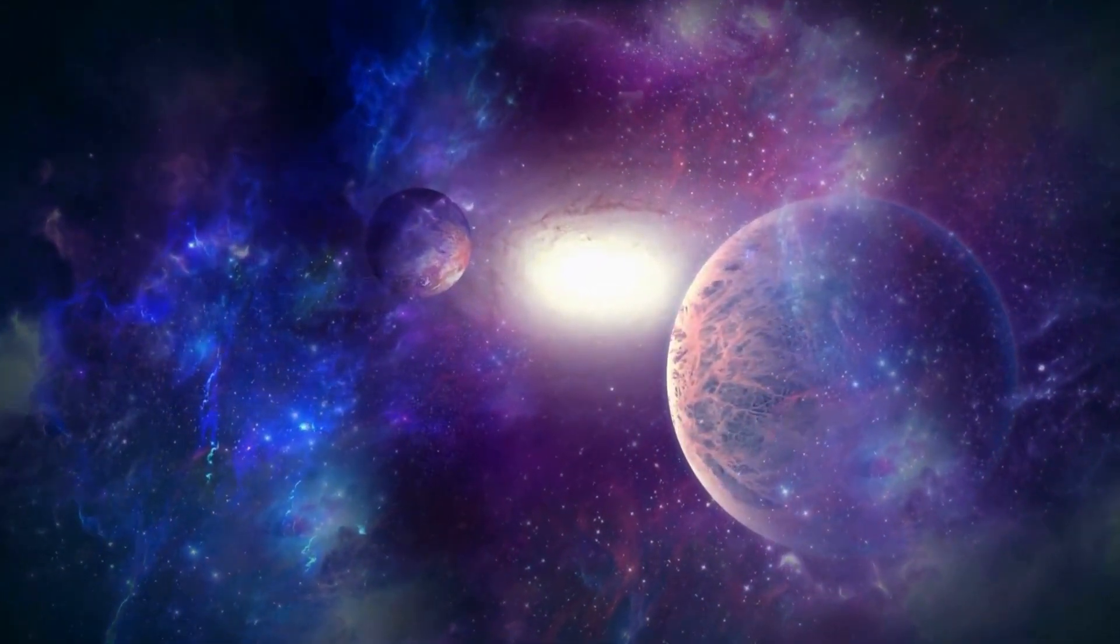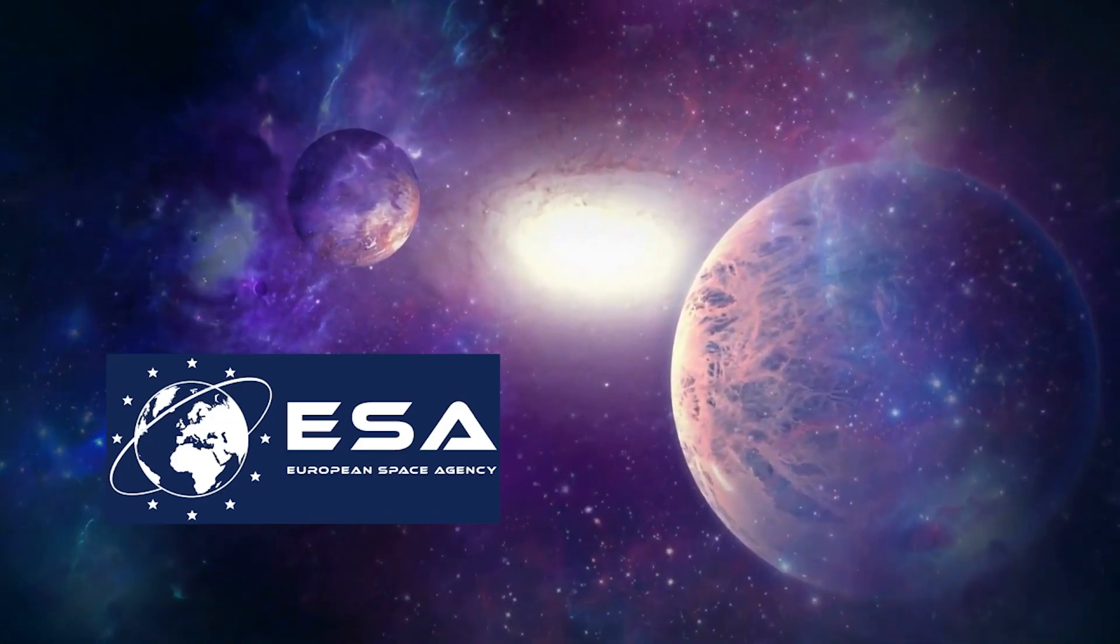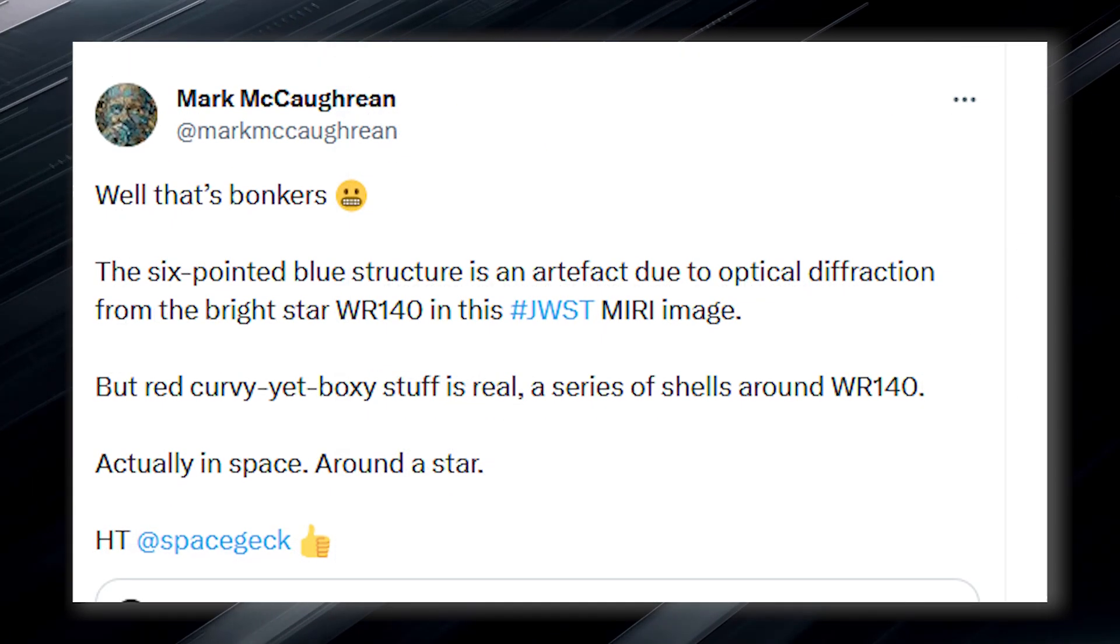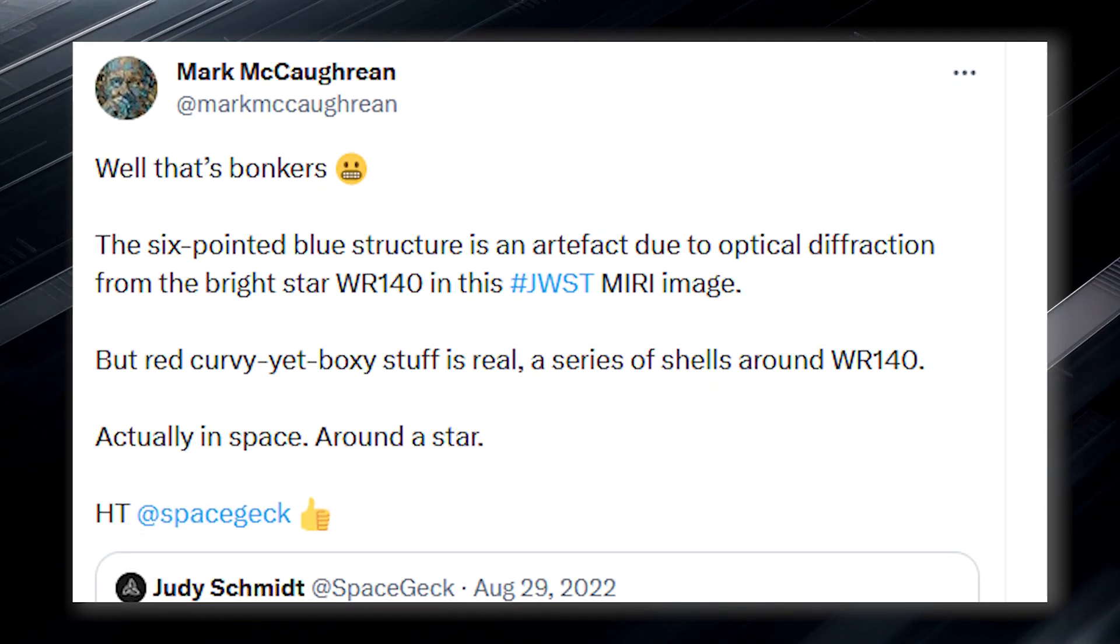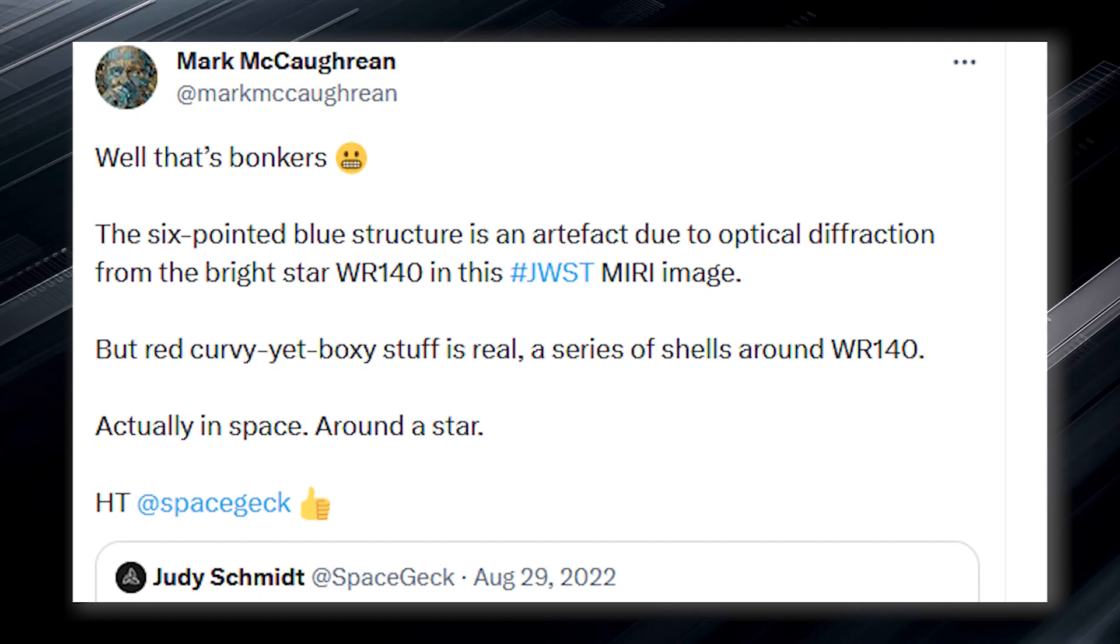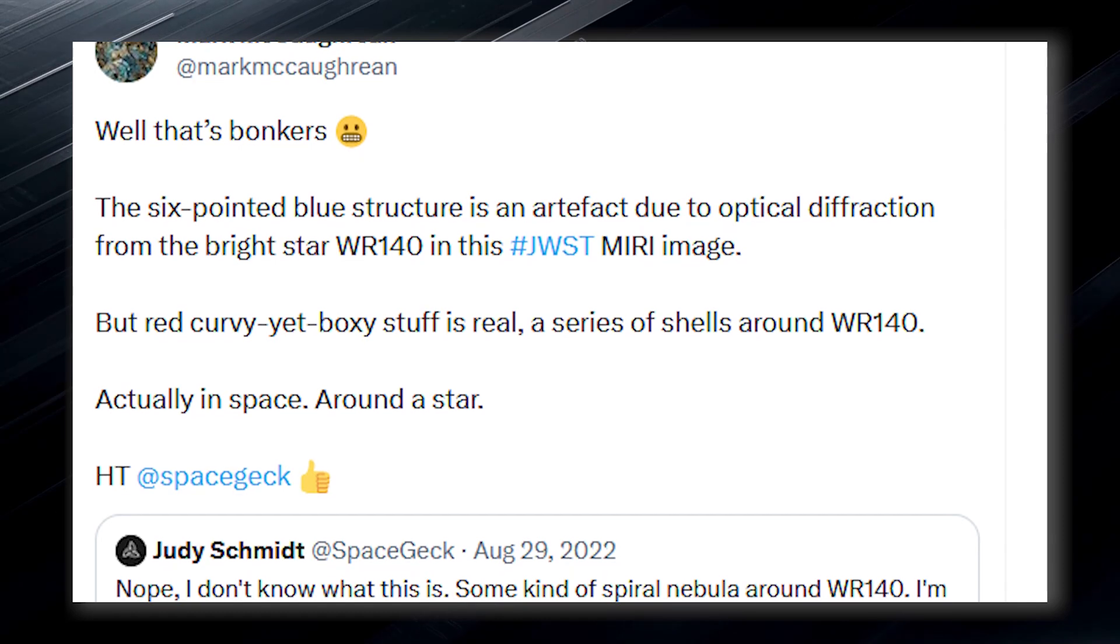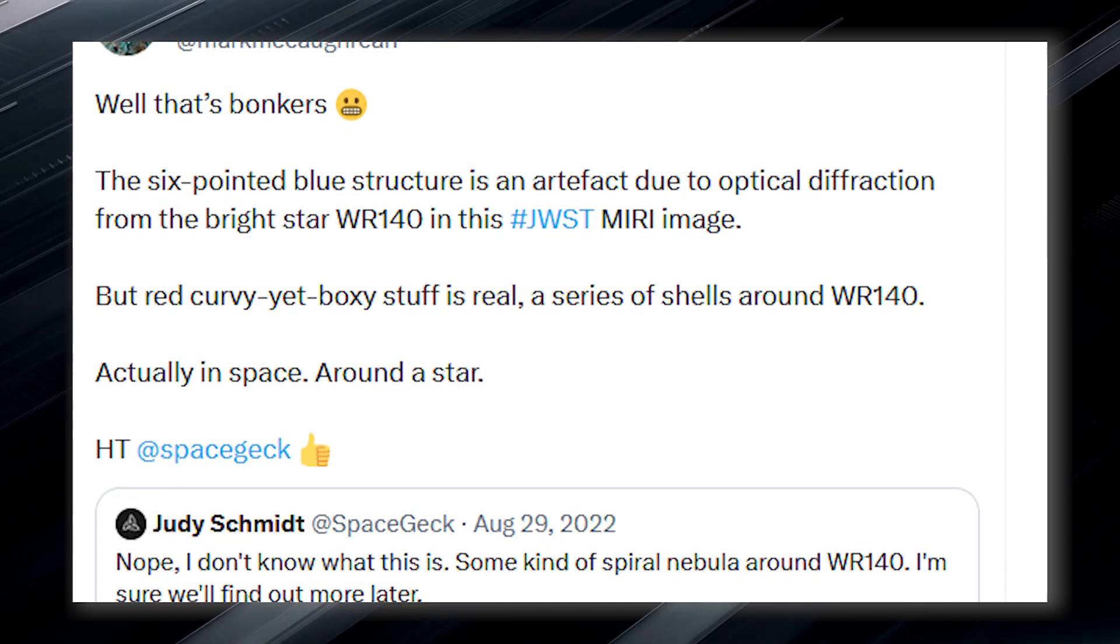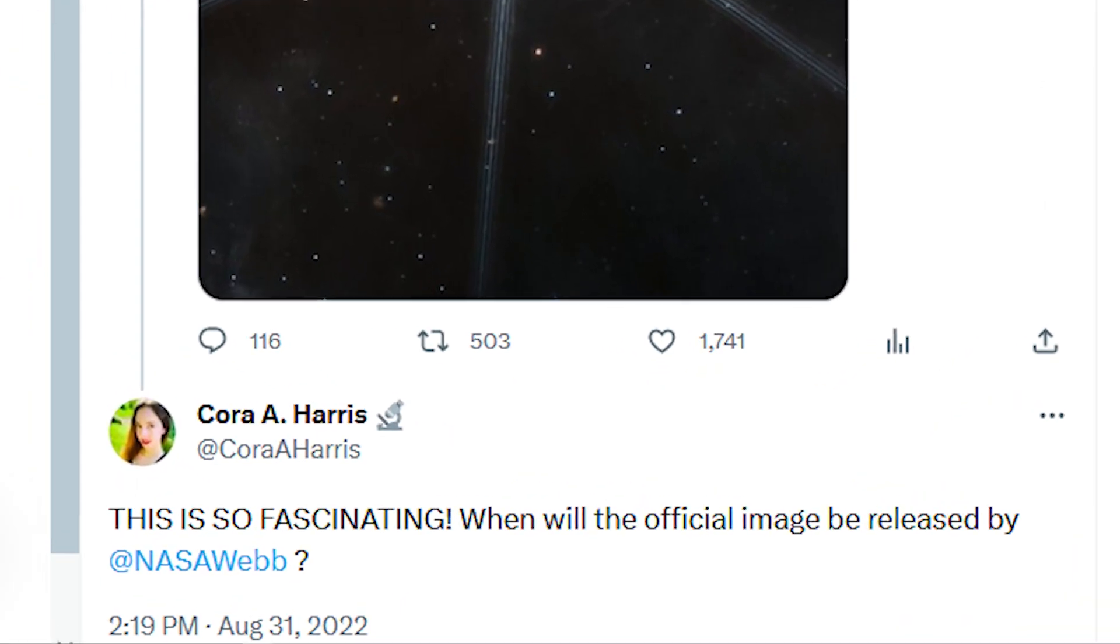Mark, an interdisciplinary scientist with JWST Science Working Group and a science advisor to the European Space Agency, called the feature wacky in a Twitter thread. He explained that the six-pointed blue structure is an artifact due to optical diffraction from the bright star WR 140 in the image. However, he noted that the red curvature is real and represents a series of shells around WR 140 in space. Although NASA is expected to have something to say about this, it is expected to make a statement soon.